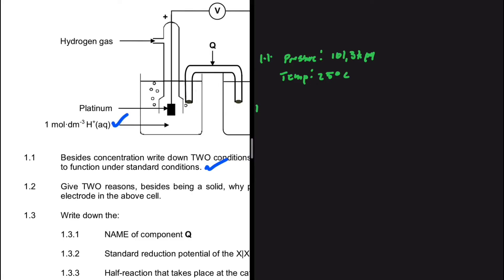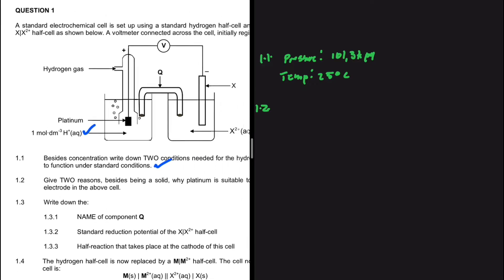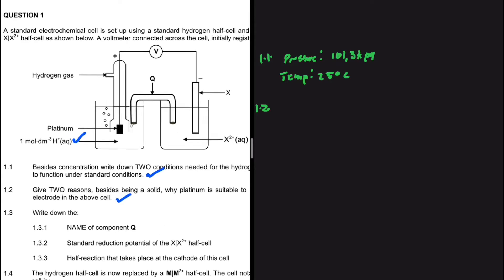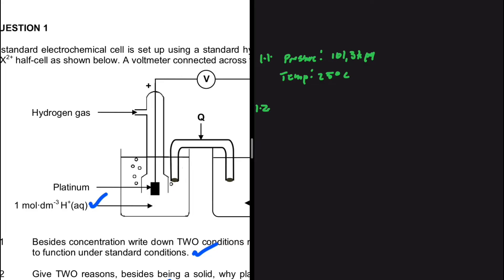Let's go ahead and take a look at 1.2. Give two reasons besides being a solid, why platinum is suitable to be used as an electrode in the above cell. So as you can see here, whether it's hydrogen gas, platinum is used as an electrode. Let's talk about why that is so.